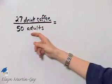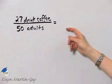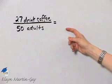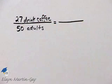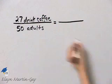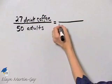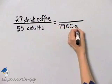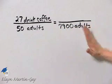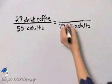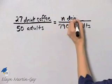Our first rate, I wrote down, 27 drink coffee out of 50 adults. Then remember, we're told we have a town with 7,900 adults. So where should that go on the right side of my proportion? If I'm keeping units the same in the numerators and in the denominators, then 7,900 adults will go in the right side denominator, and we want to know how many drink coffee. So I'll let that be n drink coffee.